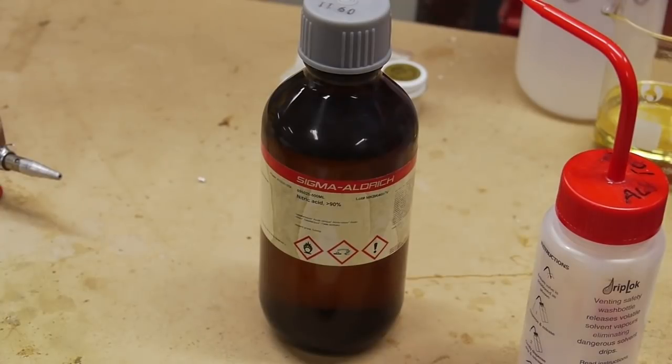There's also white fuming and red fuming nitric acid. The red fuming has a lot of nitrogen oxides dissolved in it. And the white fuming is relatively free of nitrogen oxides.